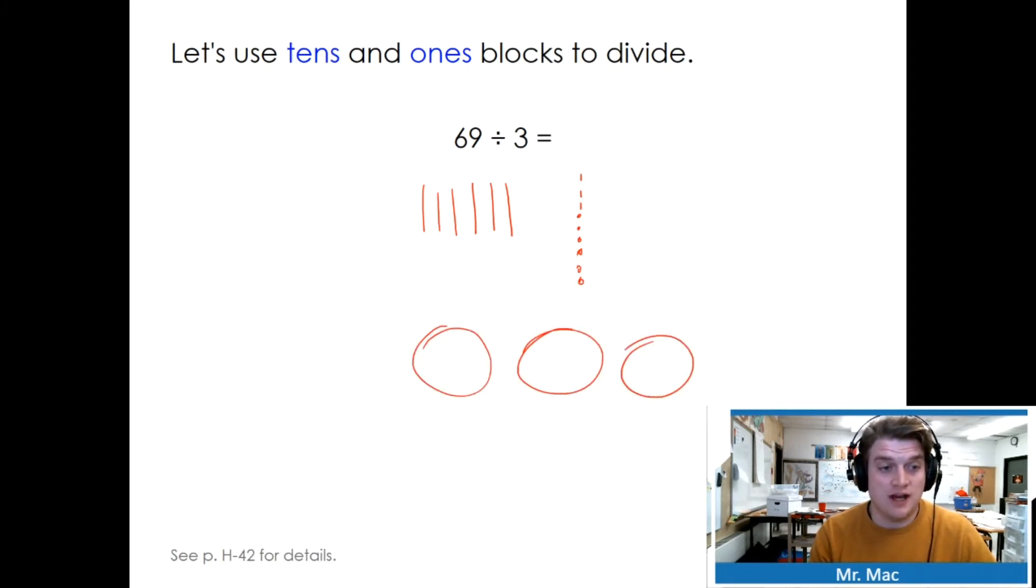We have nine ones: 1, 2, 3, 4, 5, 6, 7, 8, 9. We have three ones in each group. Let's share the tens: 10, 20, 30, 40, 50, 60. We find that our answer, the quotient, is 23.